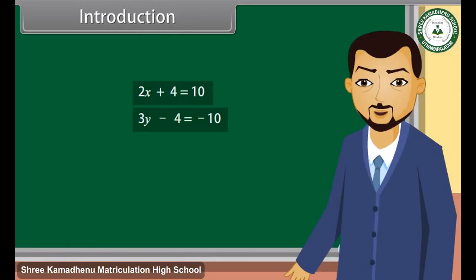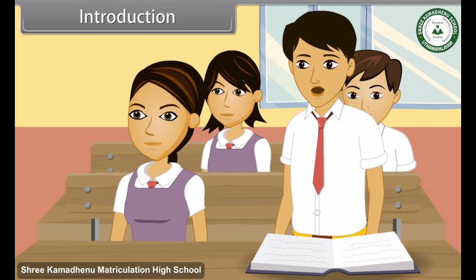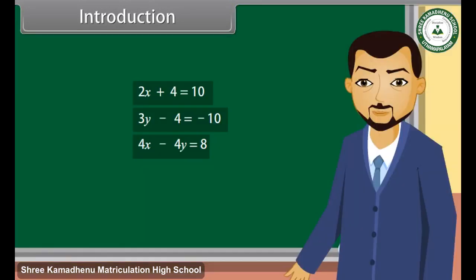And what type of equation is this? This is also a linear equation. You are right. This is also a linear equation, but it has two variables. So it's a linear equation in two variables. Today we will learn about the pair of linear equations in two variables.